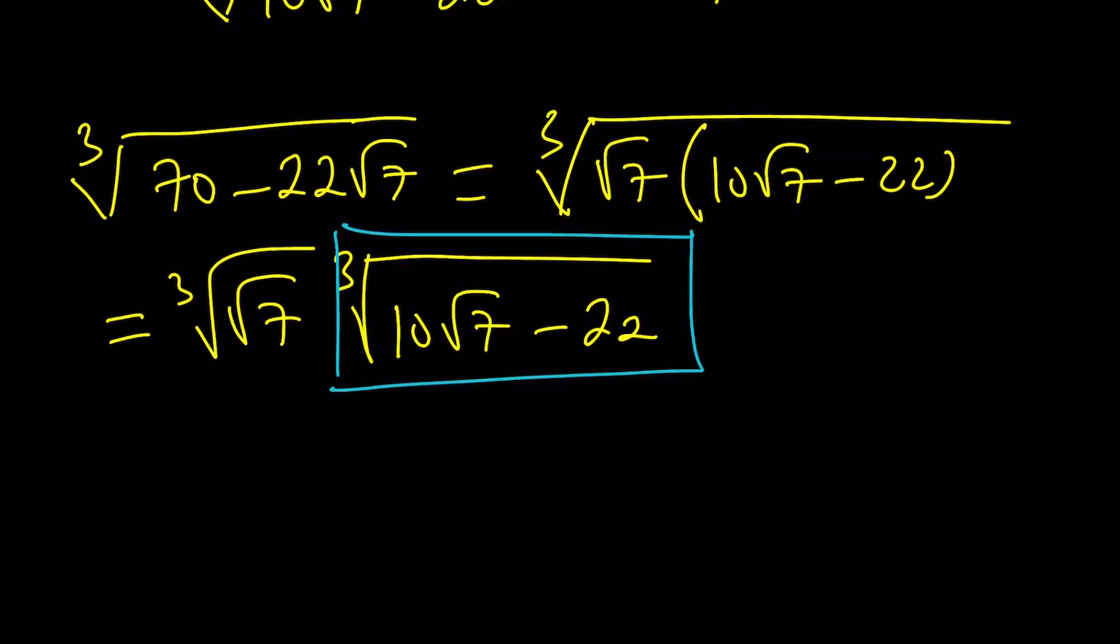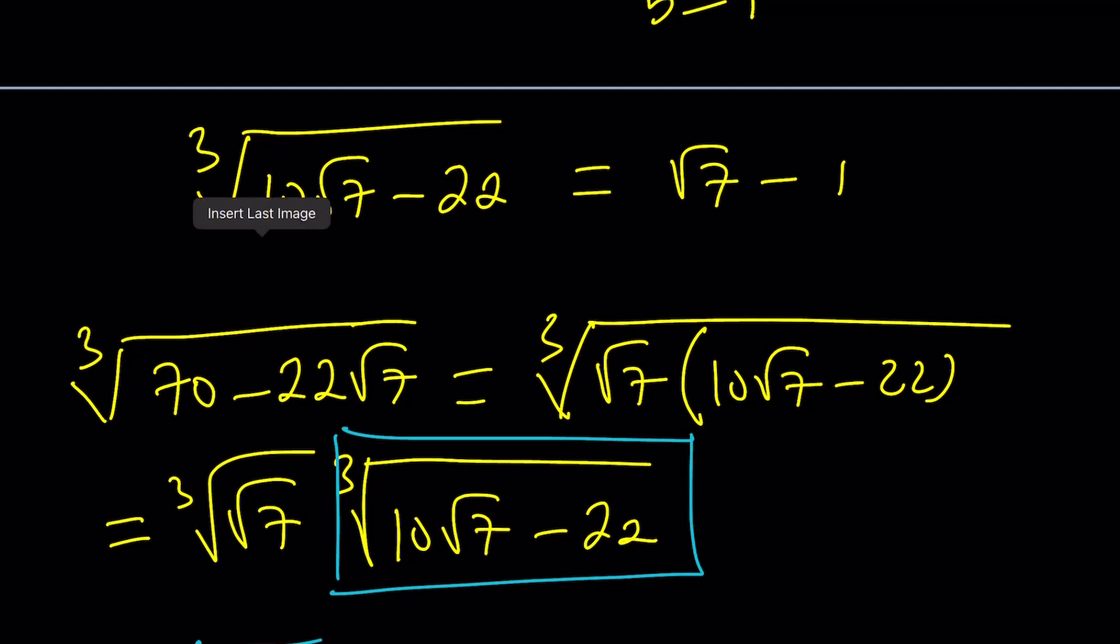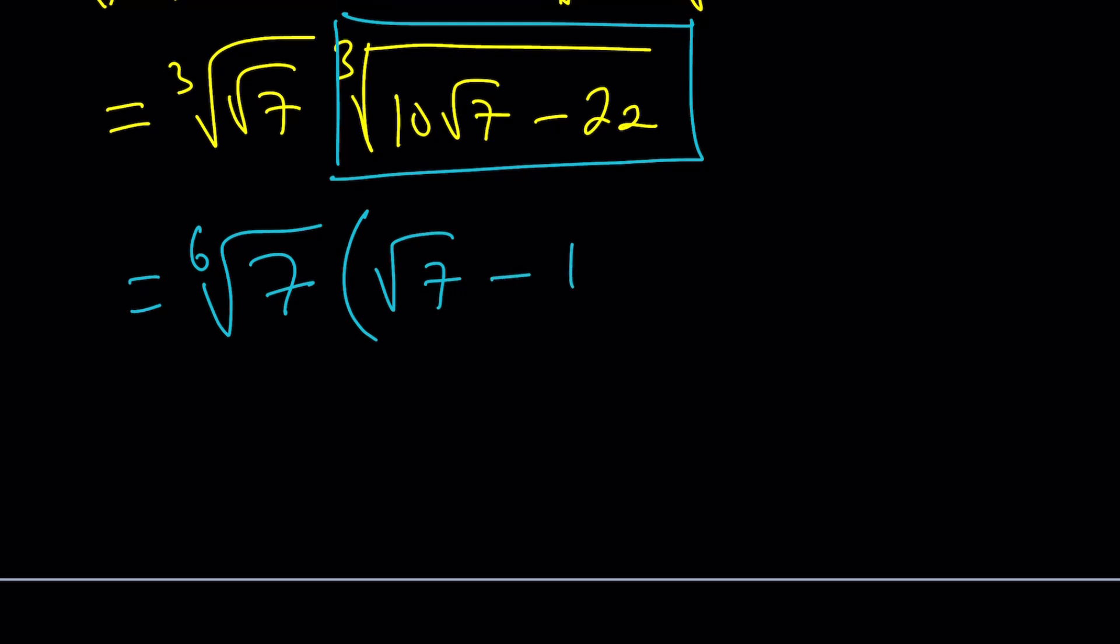Cube root of square root of 7 times the cube root of 10 root 7 minus 22. So the whole thing cannot be denested directly. But this can be. After taking out the bad 7. But what is the cube root of the square root of 7? It is just the 6th root. You multiply the indices. And then we kind of have to deal with this. But we know that the cube root of 10 root 7 minus 22 is equal to root 7 minus 1. So we could directly plug that in. So is that the answer? Let's make it nicer.